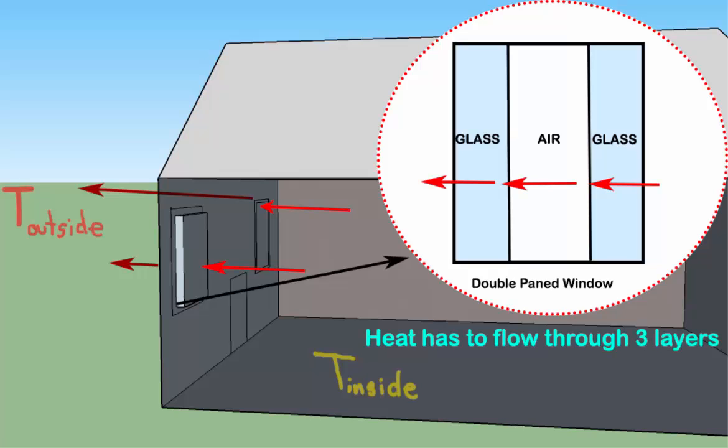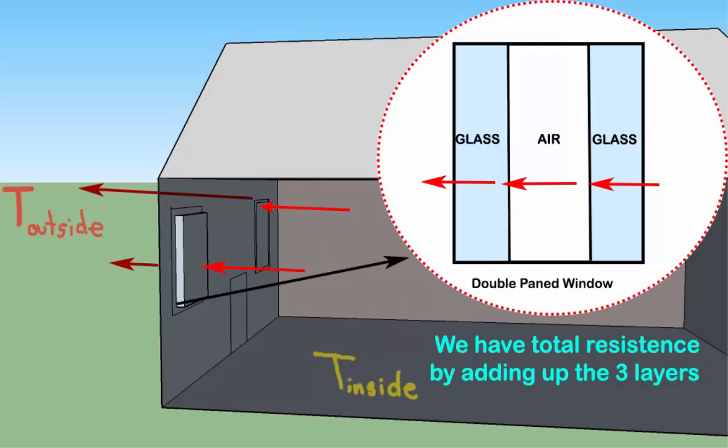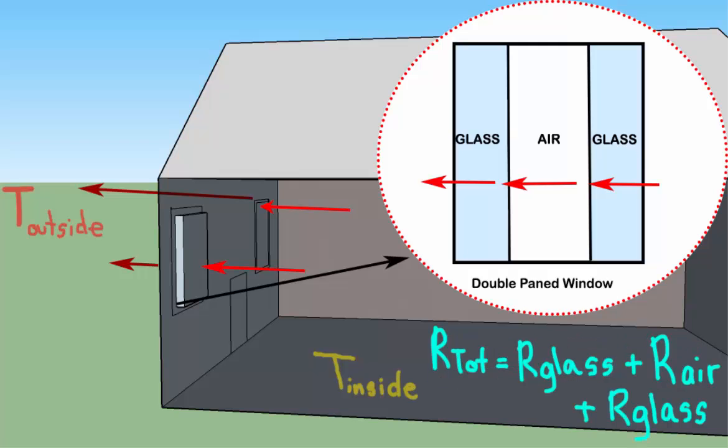So the resisting effect of the three layers should add up to a total heat resistance of the window. This will be R-total equals R-glass plus R-air plus R-glass.